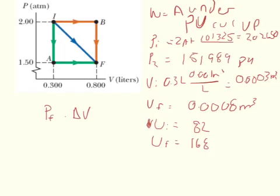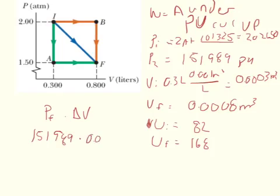Now that we have everything in useful terms, we can calculate the area under the PV diagram. For path IAF, the segment from I is completely vertical so there's nothing under it until we reach point A. The area is height times width — the final pressure times the change of volume: 151,989 pascals times 0.0005 cubic meters (0.0008 minus 0.0003), giving a positive 75.9945 joules.